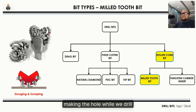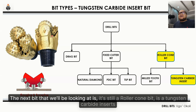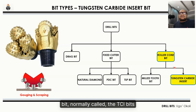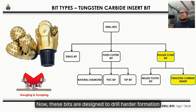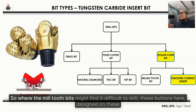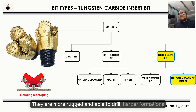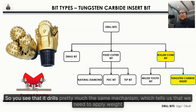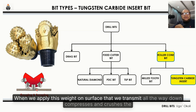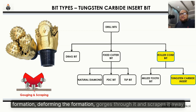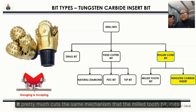The next bit is still a roller cone bit — the tungsten carbide insert (TCI) bit, normally called the TCI bit. These bits are designed to drill harder formations where the mill tooth bit might find it difficult. The buttons on the cones are harder and more rugged. It drills with the same mechanism: apply weight on surface, transmit all the way down, compress and crush the formation, deform it, gorge through it, and scrape it away.